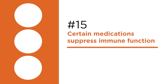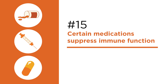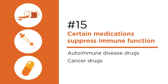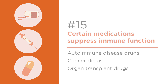Number fifteen: medications that suppress immune function. Drugs treat autoimmune diseases by suppressing the immune system, which stops it from attacking itself but also from defending you. Certain cancer treatments suppress the immune system, as do drugs administered to people who have undergone organ transplants.